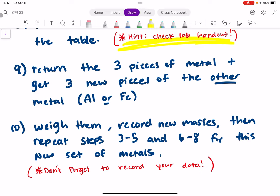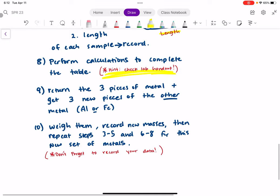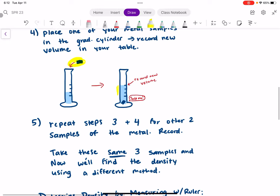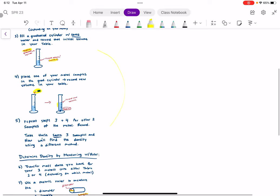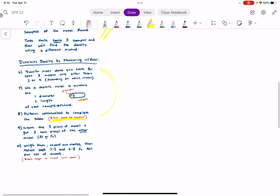You're going to weigh them, record the new masses, and then repeat steps three through five and six through eight. So that's these three steps: filling your graduated cylinder with water, placing your metal samples in, doing that same thing for the other samples. And then six through eight is these ones here.